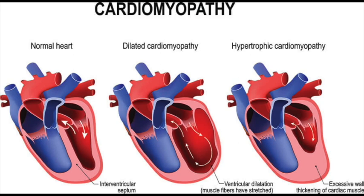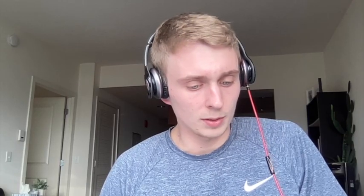There's a mnemonic for dilated cardiomyopathy: A-squared, B-squared, C and D. A-squared is autoimmune in pregnancy, and also alcohol due to decreased thiamine. B-squared is Coxsackie B virus and B1 deficiency. C is cocaine and D is doxorubicin.